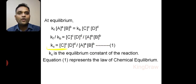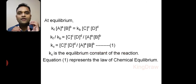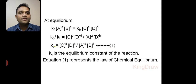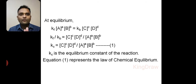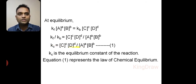So, Kc is equal to [C] raised to c into [D] raised to d upon [A] raised to a into [B] raised to b. This is equation 1. Here Kc is the equilibrium constant of this reaction, and equation 1 represents the law of chemical equilibrium. So, what is the law of chemical equilibrium? We have the mathematical statement: Kc equals [C] raised to c into [D] raised to d upon [A] raised to a into [B] raised to b.